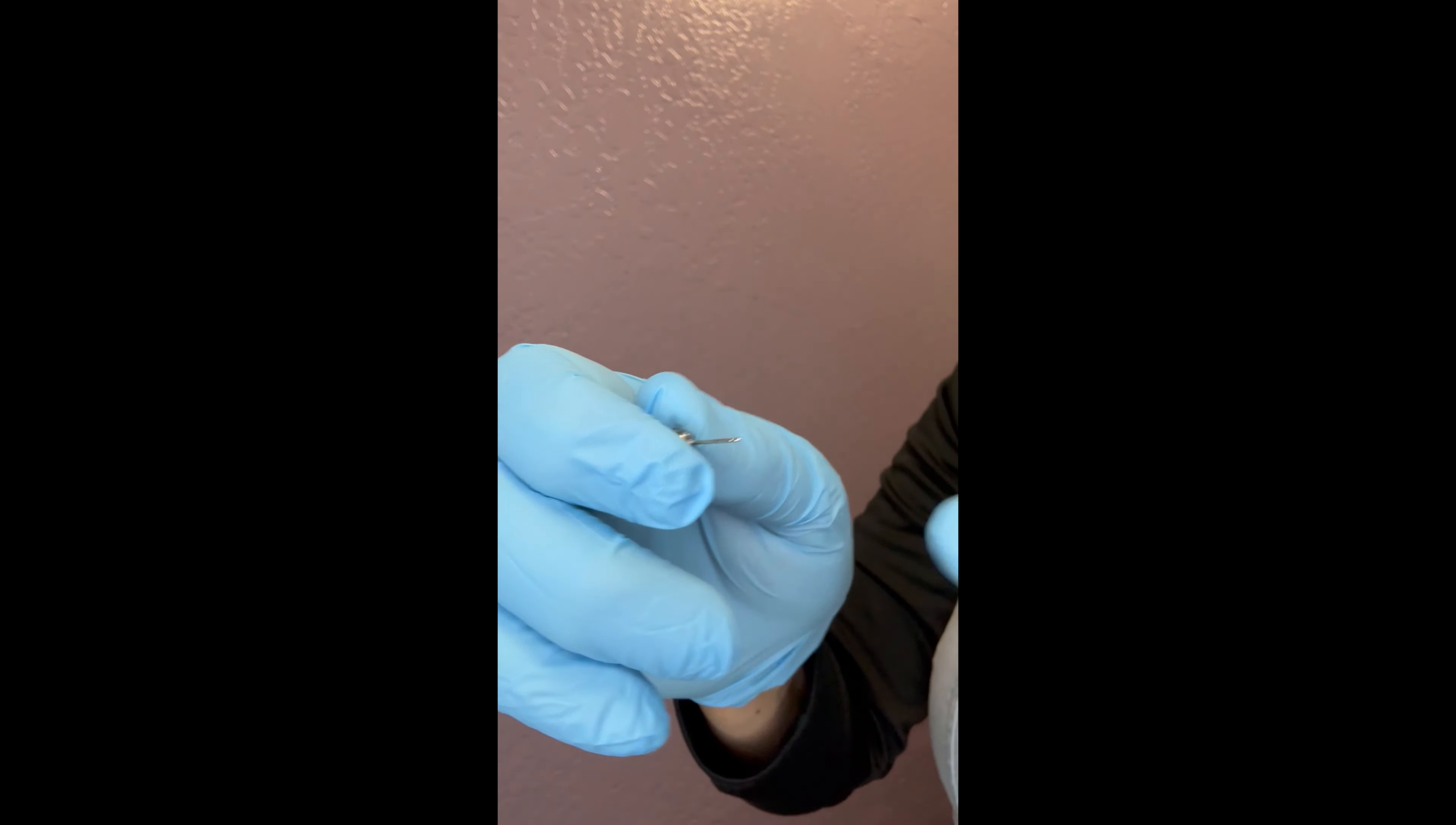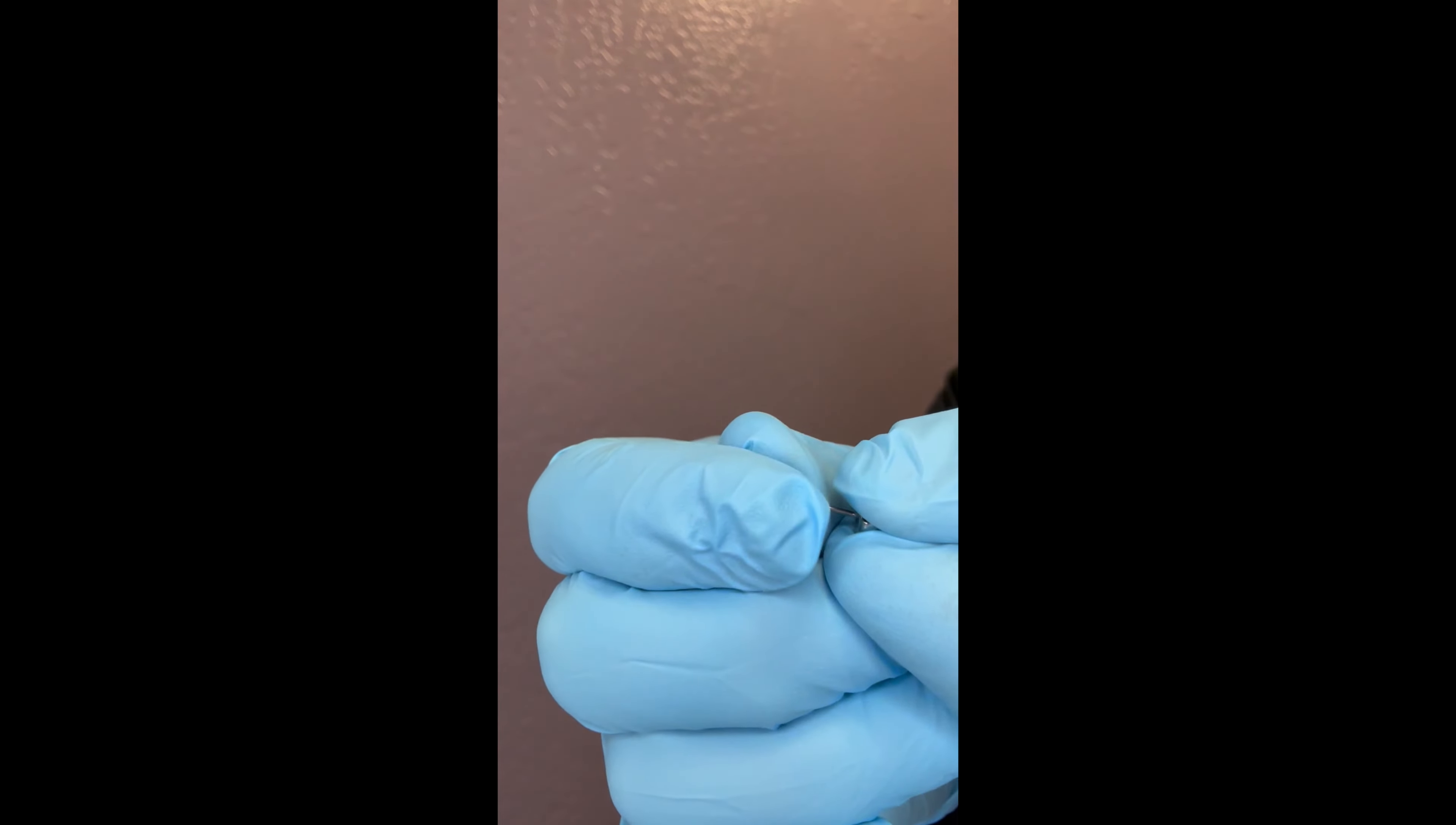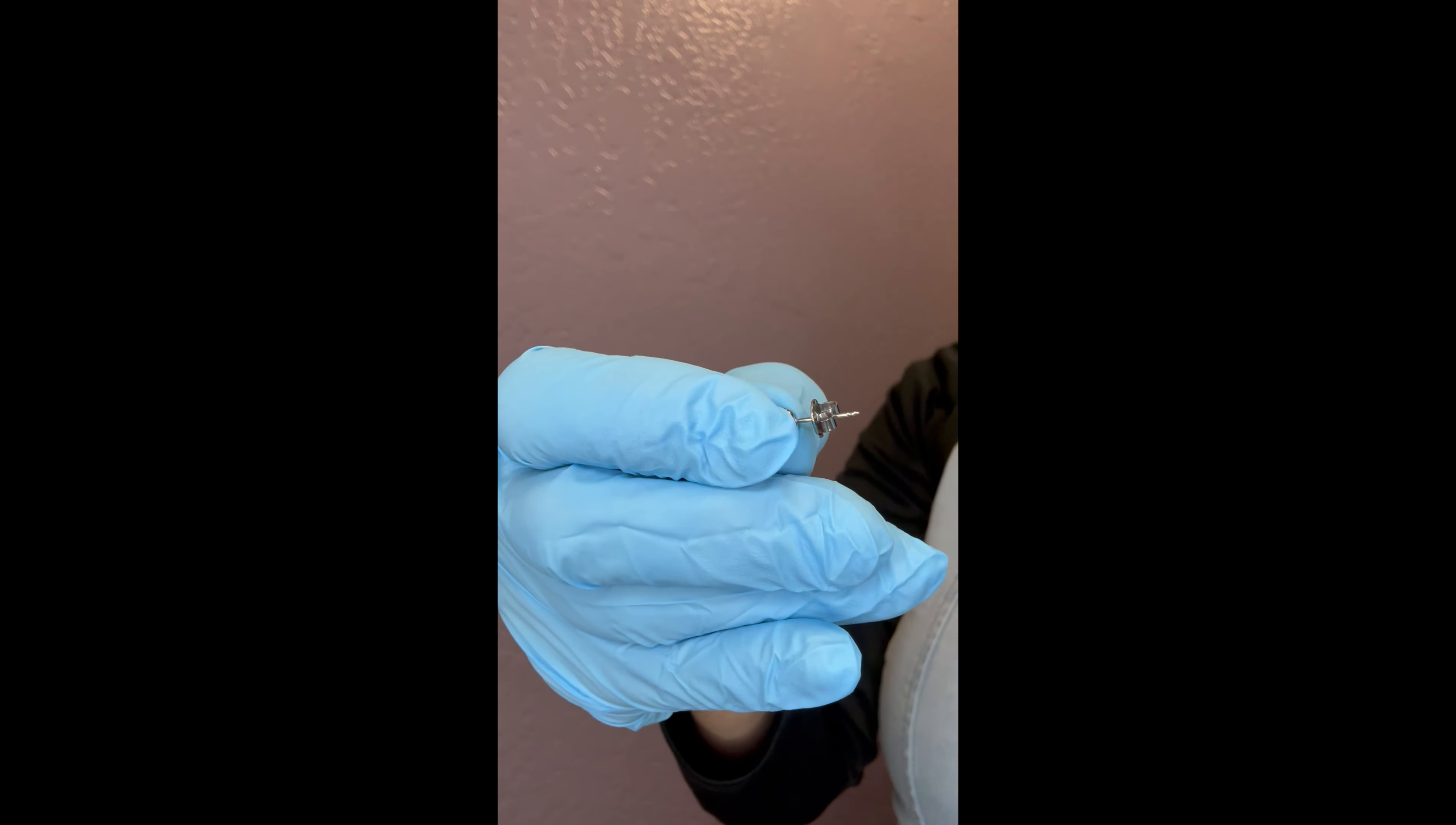The friction backing sits on the notch inscribed on the post. When installing the jewelry, you put it through the piercing site and attach the backing, which sits on the notch and clicks into place.